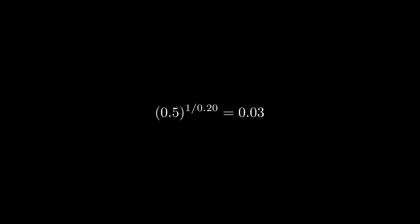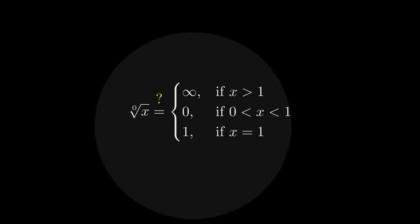And so suddenly, defining the zeroth root as infinity makes less sense because it depends on the value of x. And so you may be tempted to define the zeroth root of x piecewise, like this, infinity if x is larger than 1, and 0 if we're between 0 and 1. By the way, if x equals 1, you probably just want this to be 1 itself.